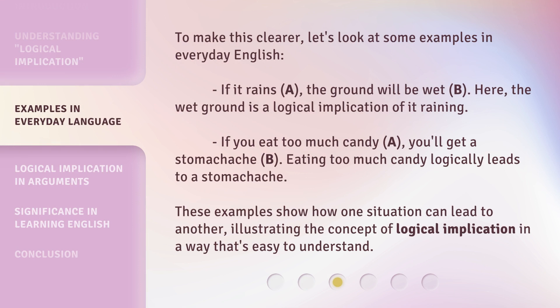To make this clearer, let's look at some examples in everyday English. If it rains (A), the ground will be wet (B). Here, the wet ground is a logical implication of it raining.